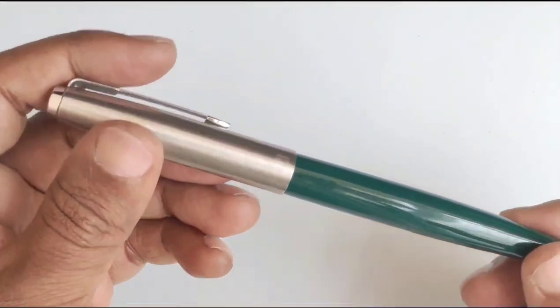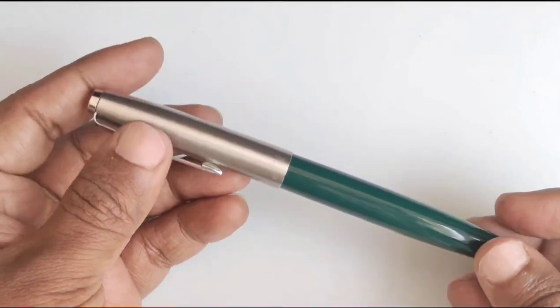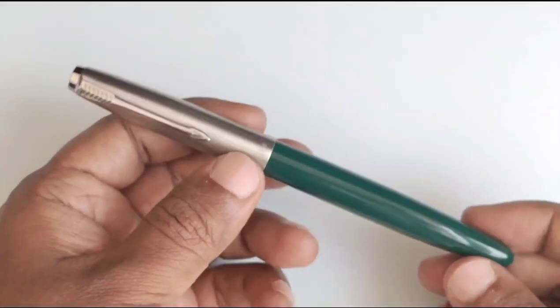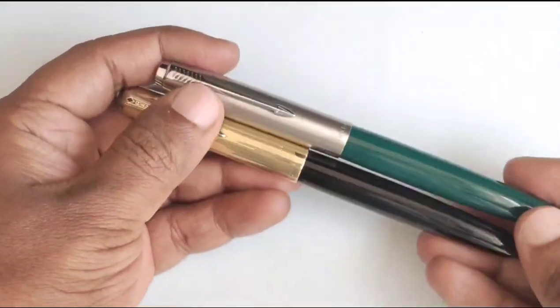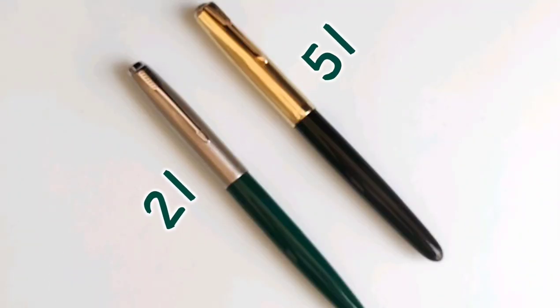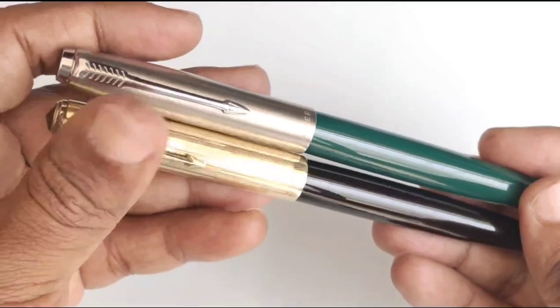At first I am presenting the Parker 21 which was introduced in the year 1948. This model is the less expensive version of Parker 51. Parker 51 was launched in 1941. We can see here both 51 and 21 look almost the same in appearance.